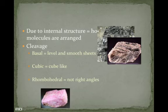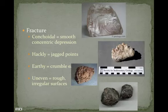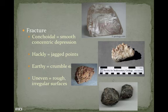The type of breakage is due to the internal structure — how the molecules are arranged. Basal cleavage yields levels from sheets; cubic forms like a cube. For fracture, there are different types of irregular breaks: conchoidal is smooth and concentric; hackly has jagged points; earthy means it will crumble, almost like dirt; and uneven is just uneven.